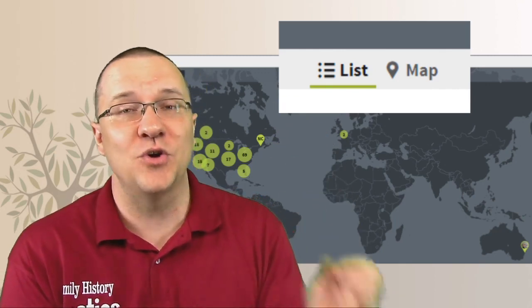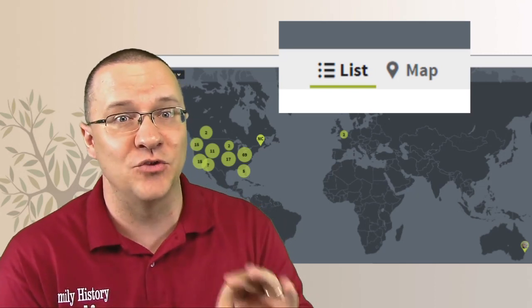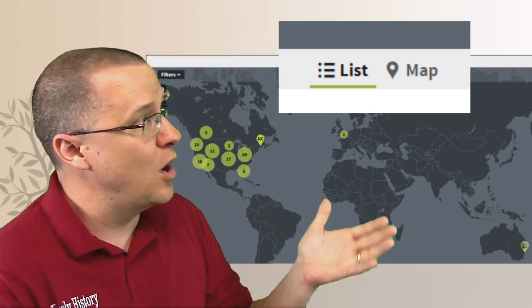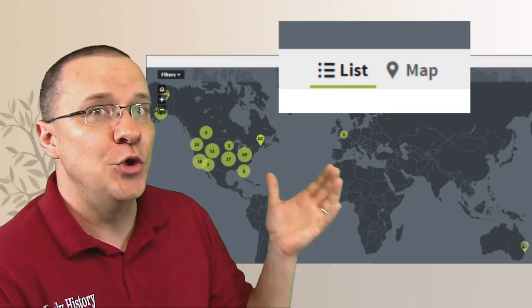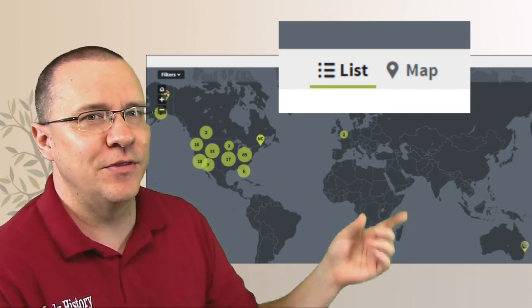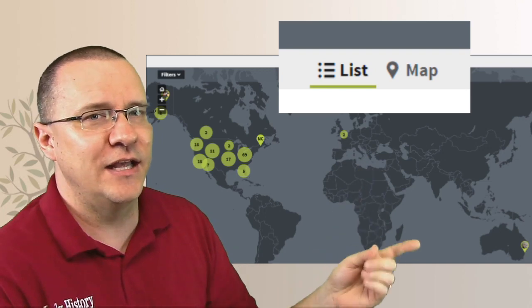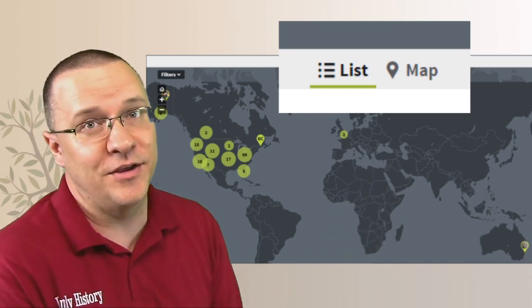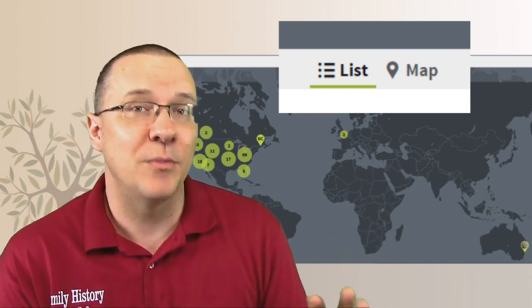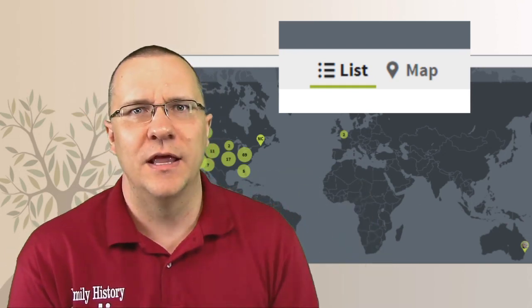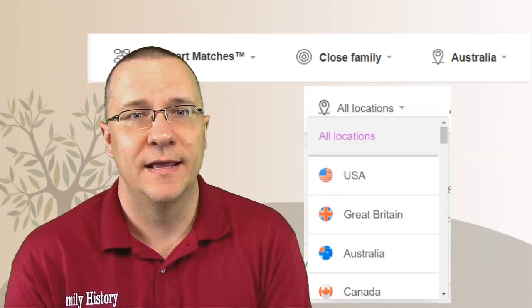And the map is great because what it does is it shows you where your matches currently live. So you can see here that there's a couple of matches over in England and a couple down there in Australia. Well, those were probably going to be relatives from the immigrants from England that this person had.